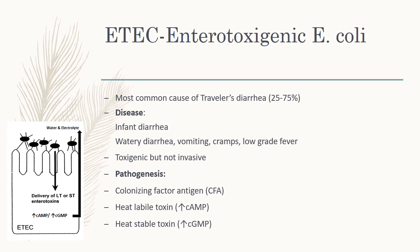For ETEC pathogenesis: attachment to the intestinal mucosa is mediated by the fimbrial protein called CFA, which is colonizing factor antigen. There are two types of toxin produced by ETEC: heat-labile toxin (LT) and heat-stable toxin (ST). LT increases cyclic AMP, while ST increases cyclic GMP. Both toxins increase the outflow of water and electrolytes into the gut lumen, causing diarrhea.